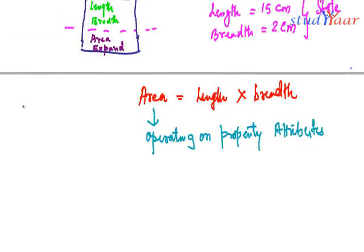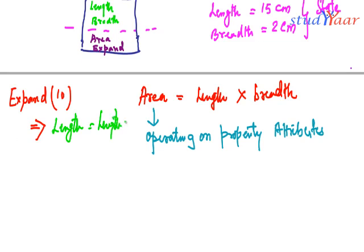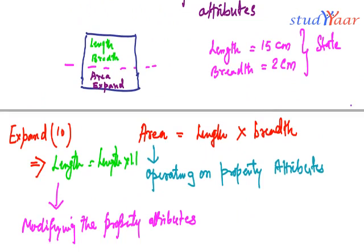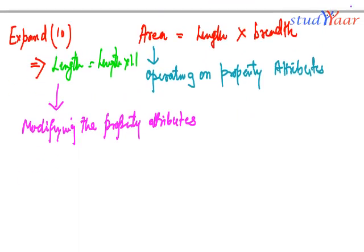We also talked about operations that modify property attributes. The other operation is that of expansion — expand by, let's say, 10%. So length = length × 1.1. Here, the expand operation is modifying the property attribute. In this way, an object-oriented database allows us to specify not only attributes, but also behavior in terms of operations that can be used on those attributes.